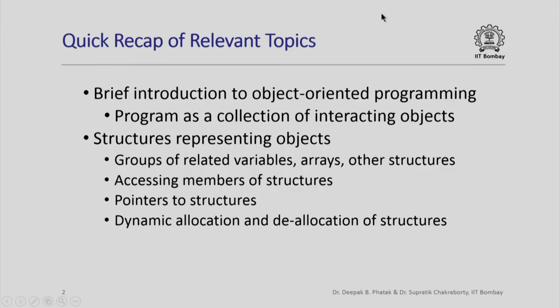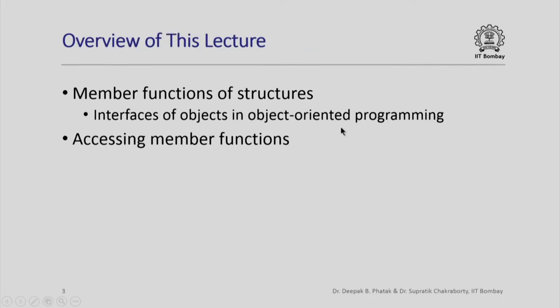Here is a quick recap of some of the topics we have already studied. We have looked at a brief introduction to object oriented programming where we considered a program as a collection of interacting objects. We have also seen that in C++ we can use structures to represent objects, where a structure is basically a group of related variables, arrays, or even other structures. We have seen how to access members of structures, how to deal with pointers to structures, and also how to dynamically allocate and deallocate structures.